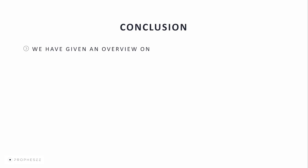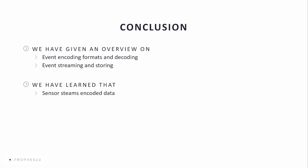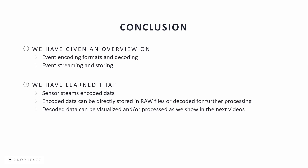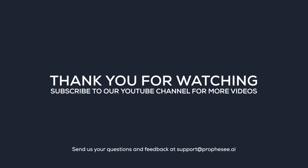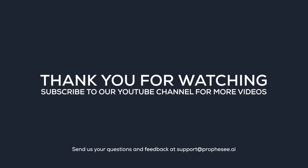Now that we've given you a brief overview on the event data and the concepts — including the event encoding formats and decoding, as well as the event streaming and storing — we've learned that the sensor streams encoded data, and that this encoded data can be directly stored in RAW files or decoded for further processing. The decoded data can be visualized and/or processed as we show in the next video. More details can be found within our documentation and other publications. In the description below, you'll find useful links related to the topics covered in this video. We look forward to your feedback. Thank you for watching and we'll see you in the next video.